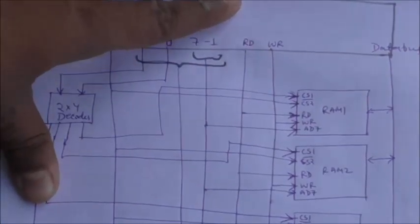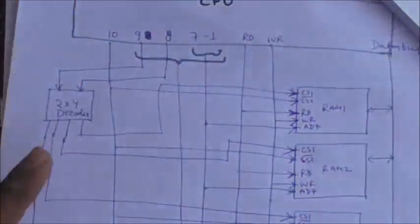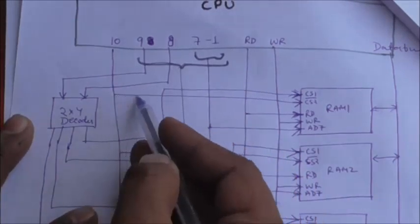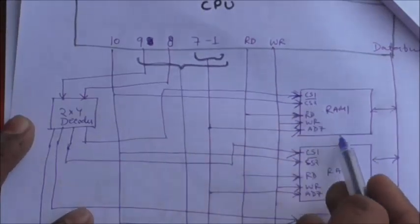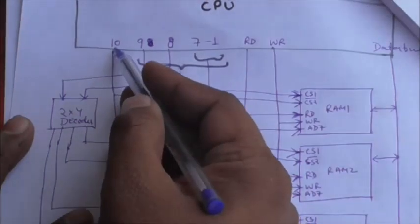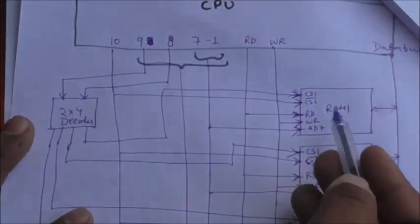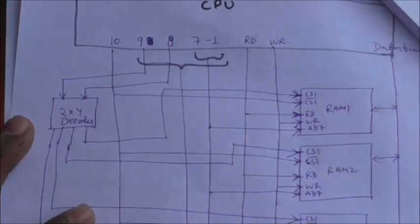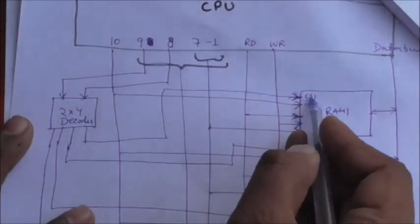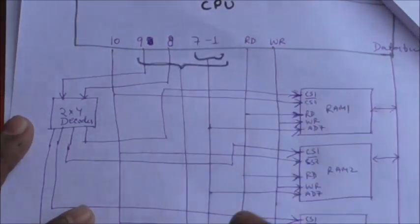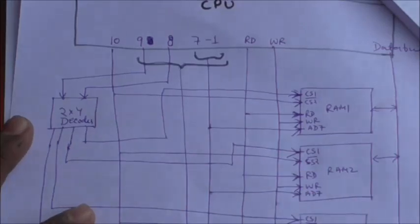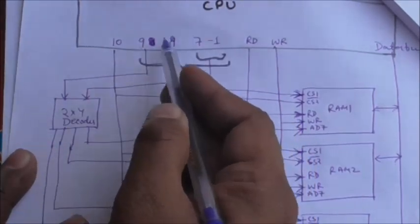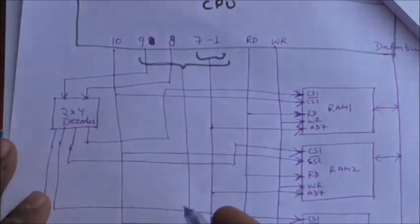Whatever content is stored at that address in ROM will be output to the data bus. If the 10th bit is 0, the address is for a RAM chip. The 10th bit is connected to the second chip select input of all RAM chips, so when it is 0, the second chip select input of all RAM chips is 0. Bits 8 and 9 are input to a 2-to-4 decoder.